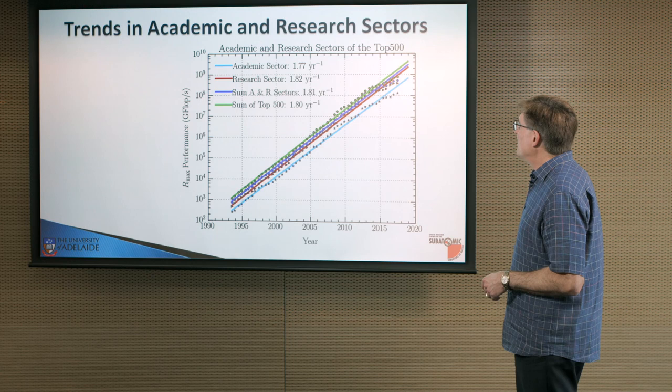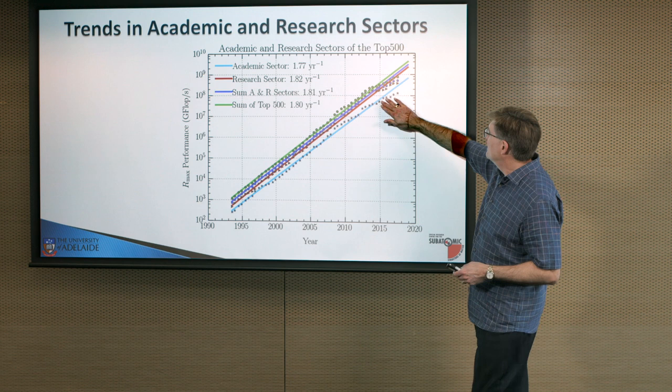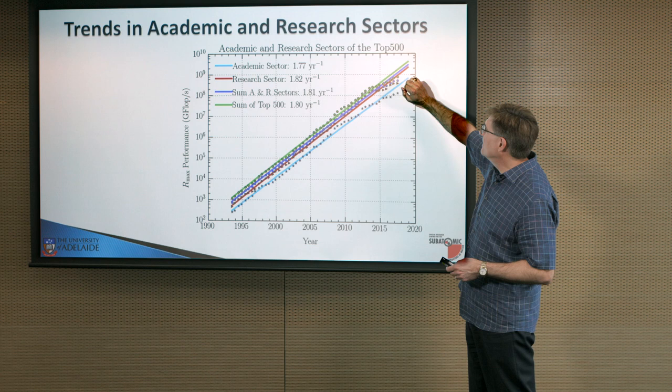What about the academic and research sectors? Well, here's the academic sector here. In blue, we've got the research sector in red. We've got the sum here in dark blue. And then the sum of the top 500 in green again.